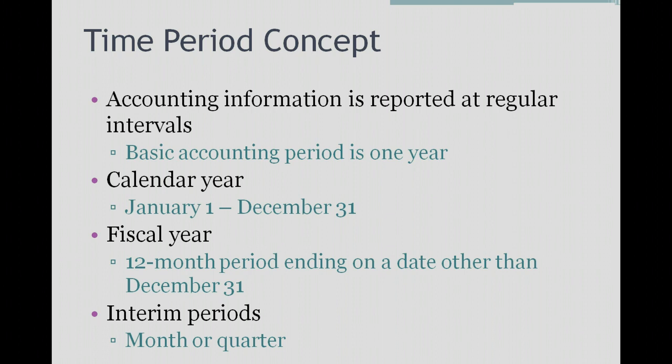The time period concept says that accounting information is reported at regular intervals. Our basic accounting period is typically one year. About 60 to 70% of the companies use the calendar year basis, which means they report their accounting information starting on January 1st of each year, and the ending date is December 31st. They are called a calendar year company.